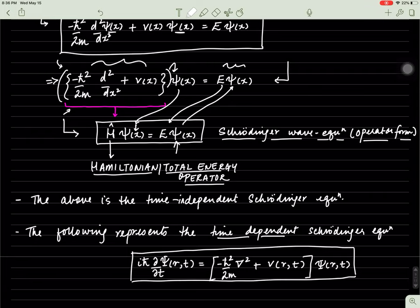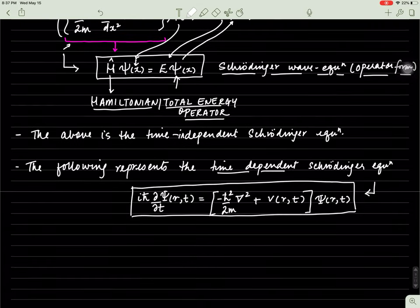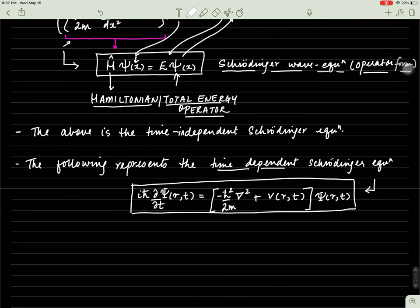However, there also exists a time-dependent Schrödinger wave equation. Some systems evolve over time. Usually it's not so important in chemistry research, but it is worth noting because sometimes it is indeed very important. The Schrödinger wave equation in its time-dependent form involves a partial differential equation because it involves multiple variables. We'll derive the time-dependent Schrödinger wave equation as we go along using the separation of variables method.